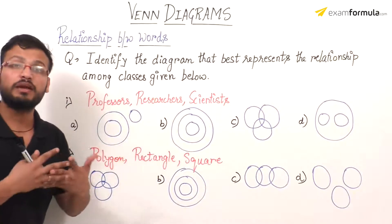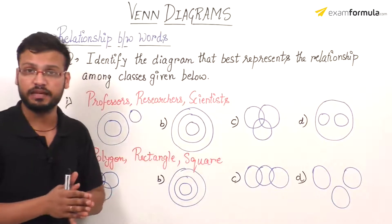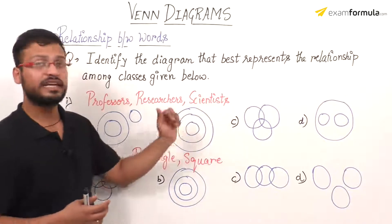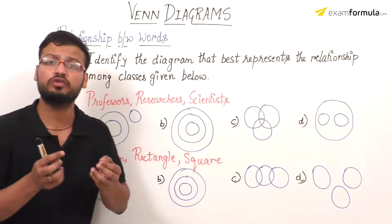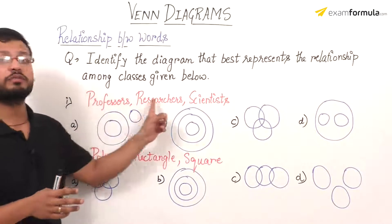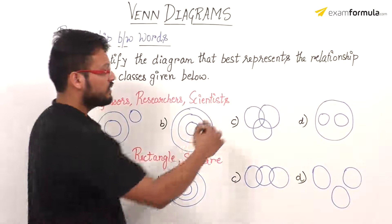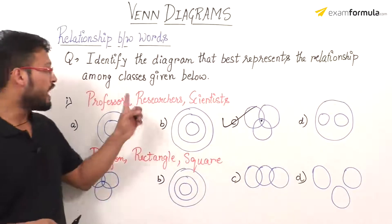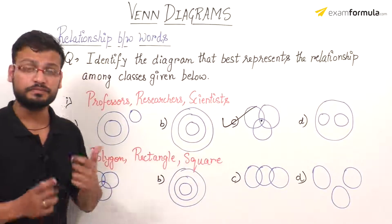These three represent different professions. There can be certain professors who are also researchers or scientists at the same time. Similarly, some researchers can also be professors and scientists, and some scientists can also be professors and researchers. So these three professions are partly related to each other — there will be some interconnection and partial link between them. The best representation will be option C, where the overlapping area represents persons who are professors, researchers, and scientists at the same time.